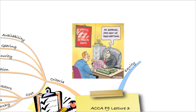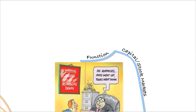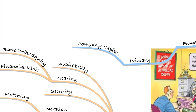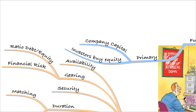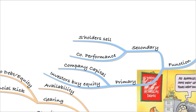First, let's look at equity — shares. We need to understand the capital or stock markets. Their function is twofold: the primary function is to enable the company to raise capital, but it also enables investors to buy equity. The secondary function enables shareholders to sell. Maybe they set the business up early, ran it for a few years, and now want to realise that investment. It also enables us to assess company performance over a number of years.